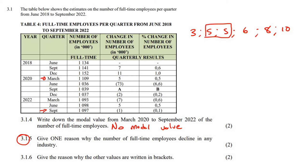This question says give one reason why the number of full-time employees might decline in any industry. They're not saying employees decrease the whole time — just why do numbers decrease? That's mainly because of retirement. Every year new people enter the job market, but people also exit. If more people are retiring than beginning to work in a specific period, we get a decline. So the answer is: people reaching retirement age.